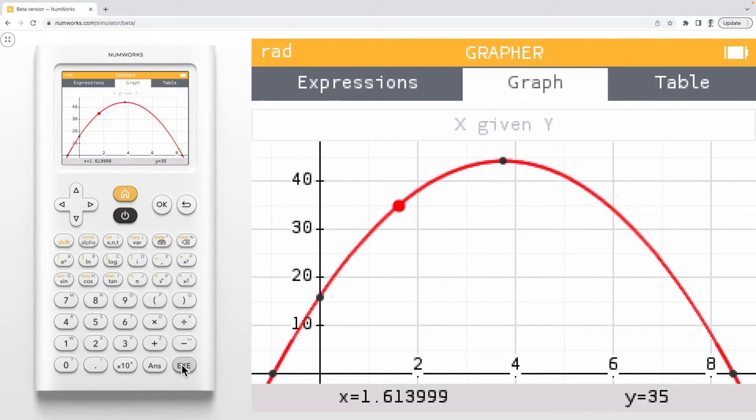Now we can use our left and right arrow keys to find additional x values with a y value of 35. Pressing OK or back takes us back to the graph tab.